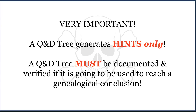Quick and dirty trees rely on information that's been gathered and correlated by other individuals. Because that's a lot of levels of abstraction, there are plenty of chances for errors. So we want to make sure that we are not perpetuating those errors when we build these quick and dirty trees and then use that information for a genealogical conclusion. Instead, we are only going to use quick and dirty trees for hints.